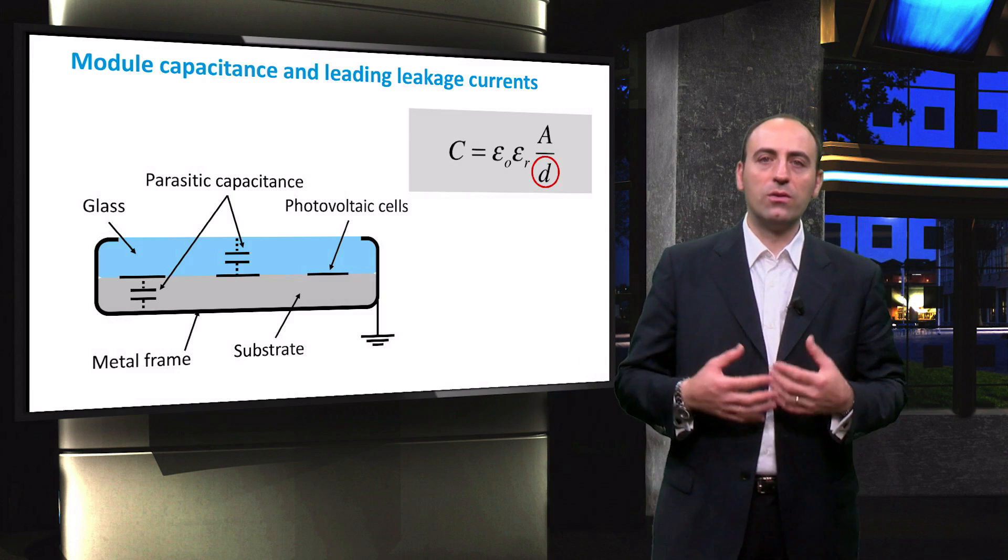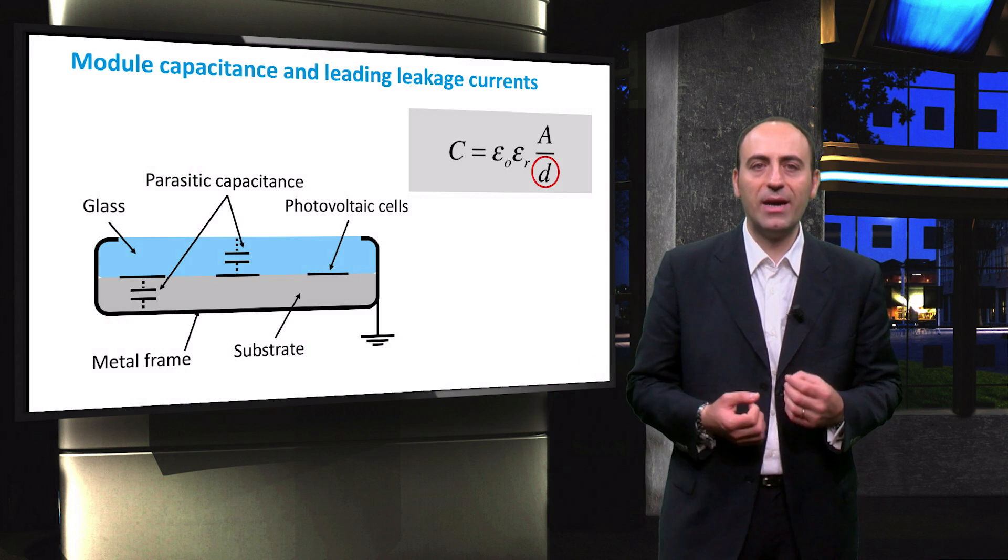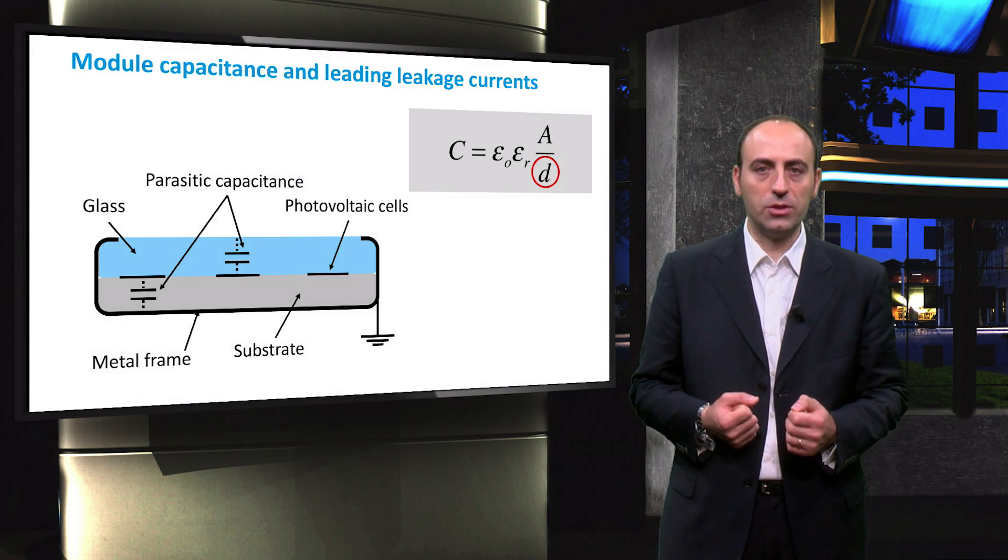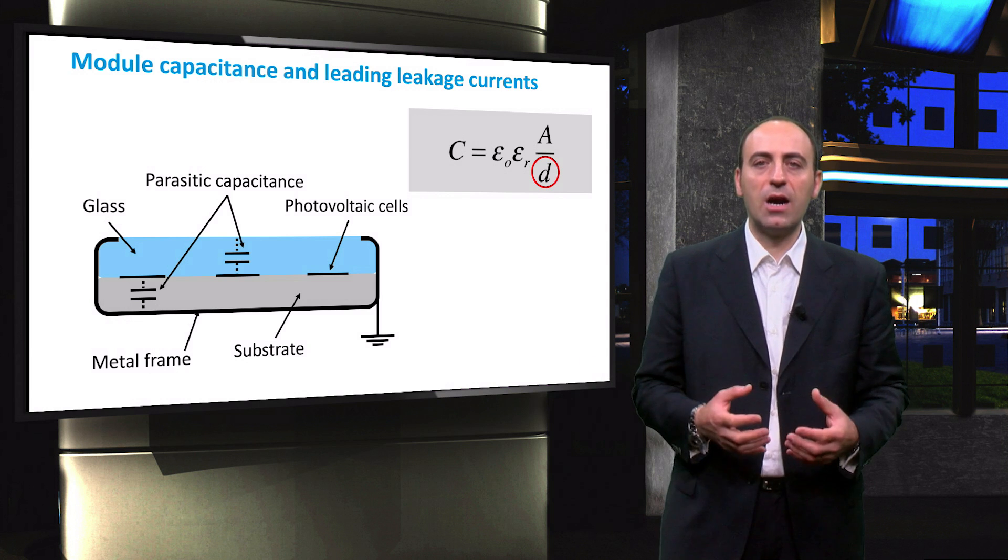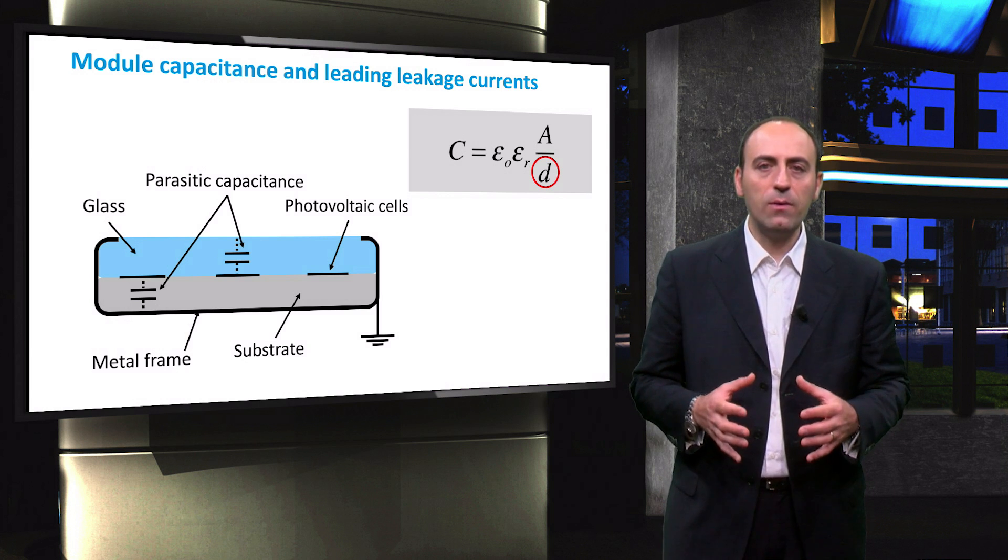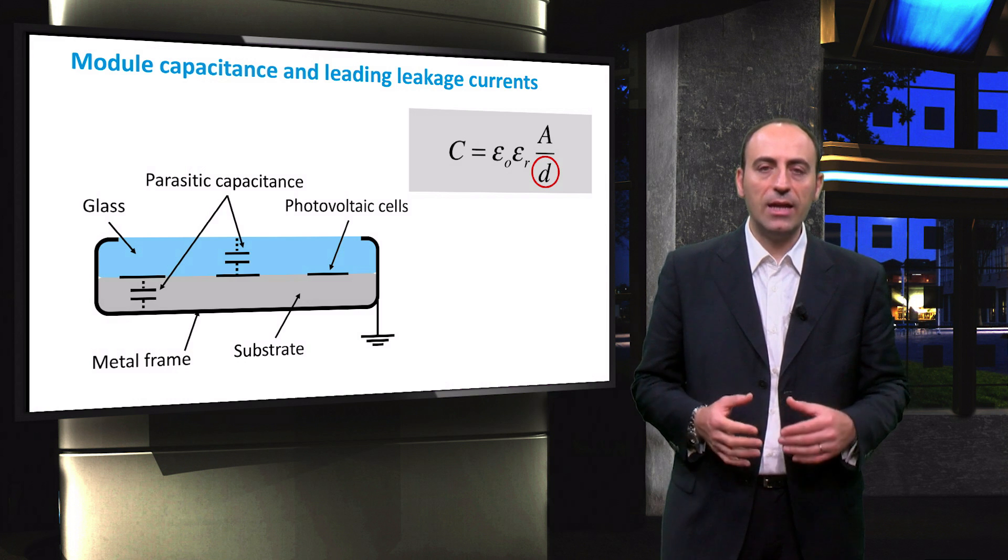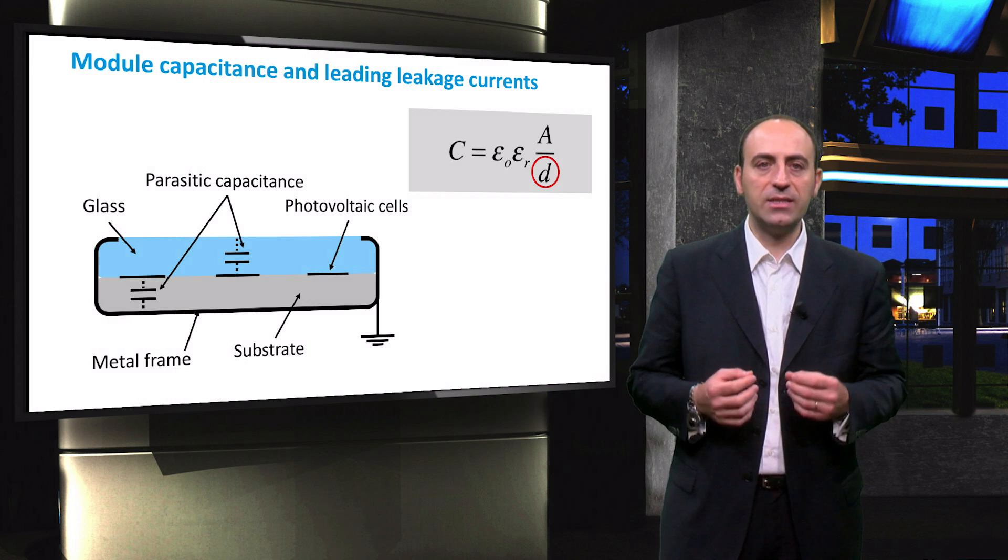Leakage current or discharge current is a reactive current, with its phase shifted by 90 degrees to the grid voltage. This means that this current is lossless and not dangerous on its own. However, this current can superimpose a possible residual current and obstruct its detection by safety devices.